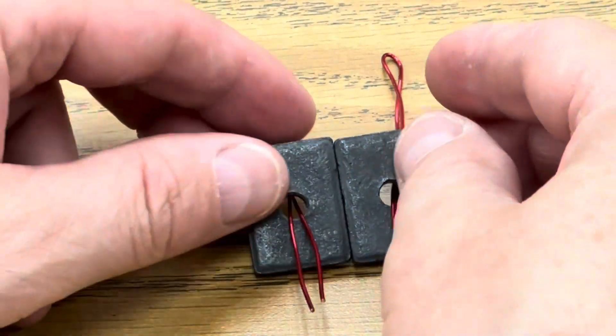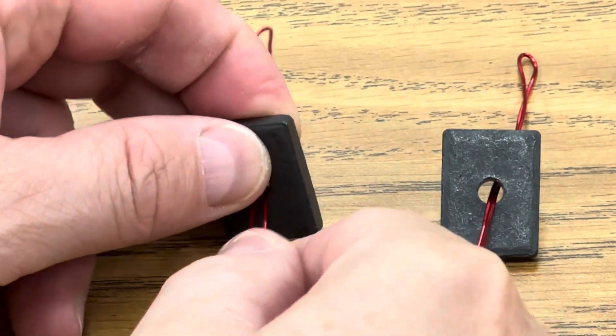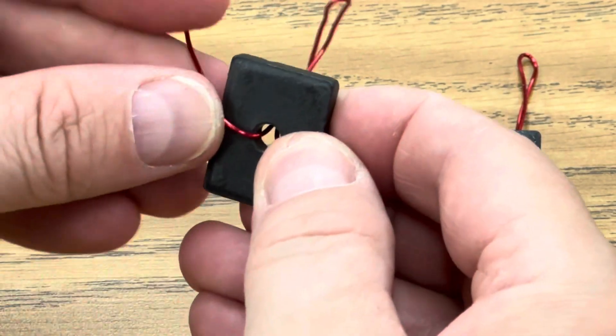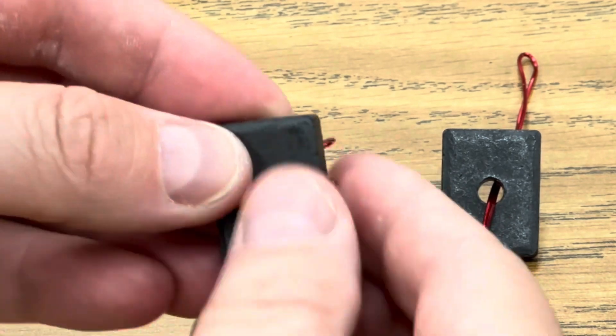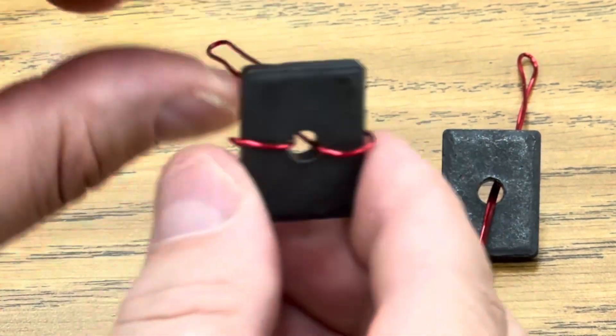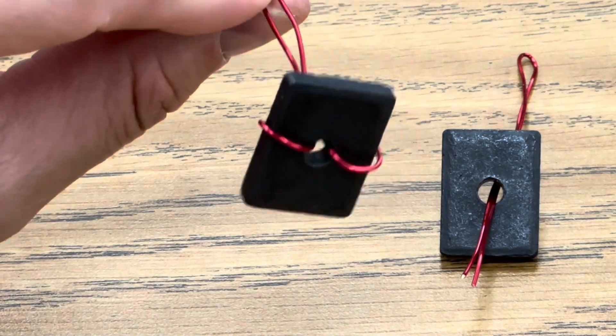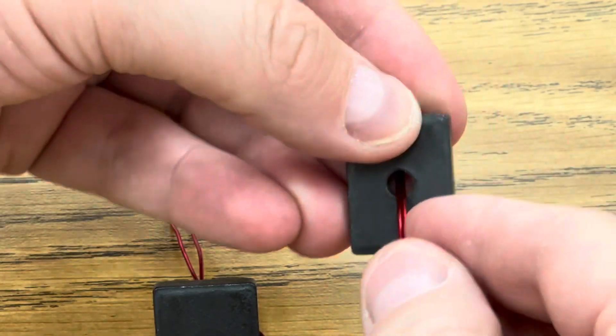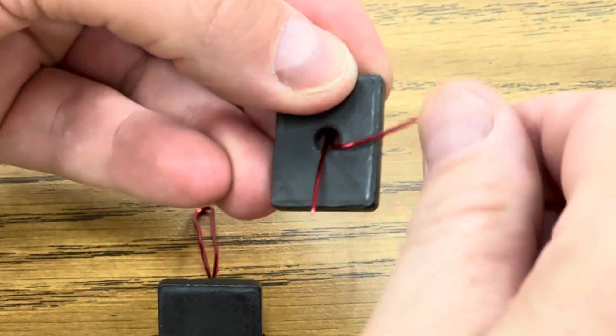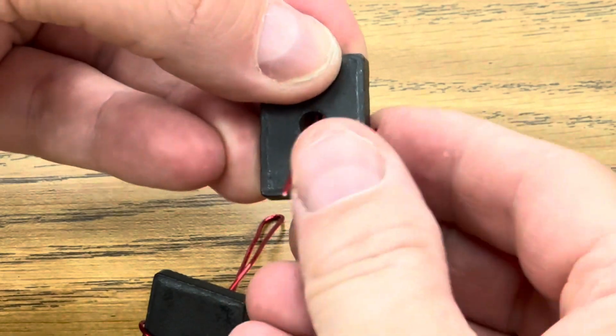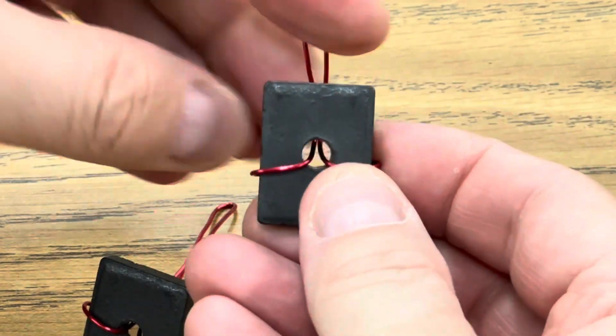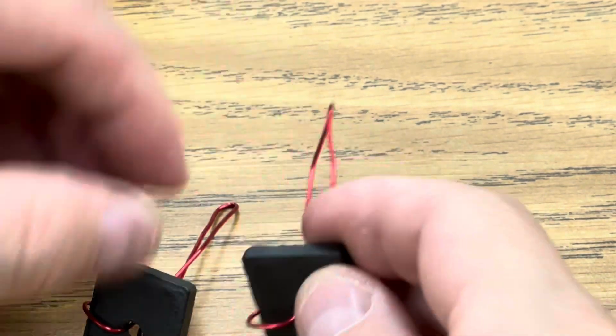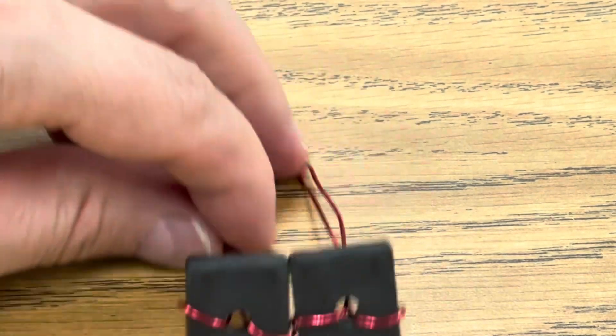Next, you're going to separate the two magnets and take the leftover wire and bend it around the back of the magnet to hold it on. Then you're going to do the same thing for the other magnet, bending the wire around the back so that you can hang it from the wire. So now both magnets look like that.